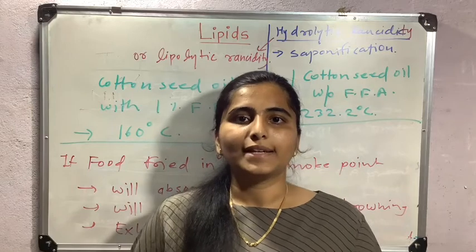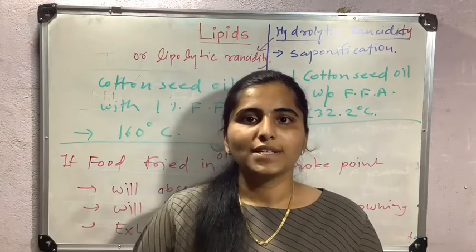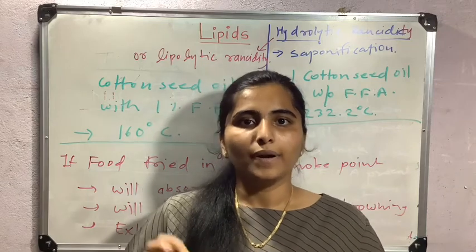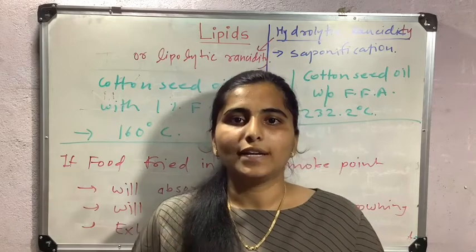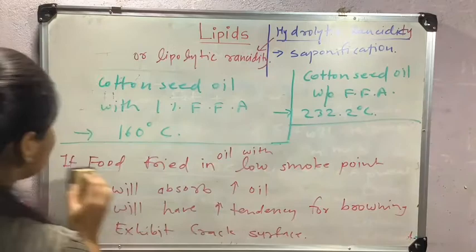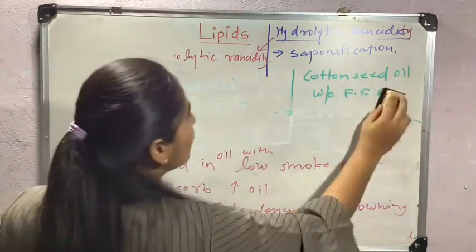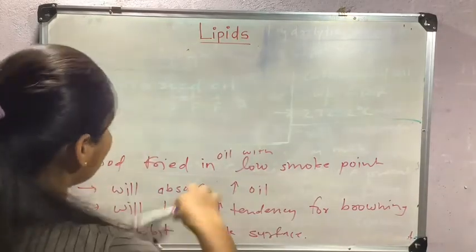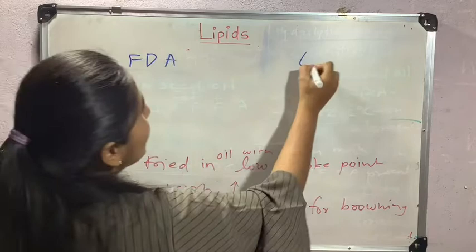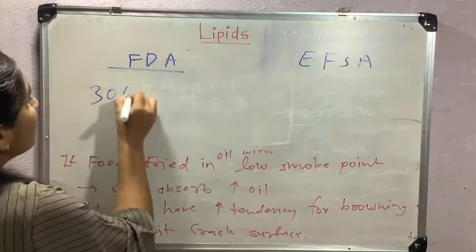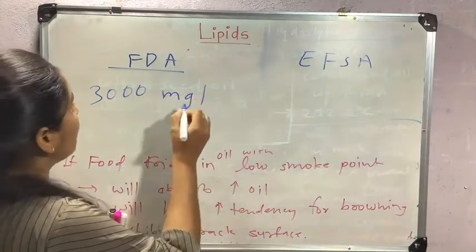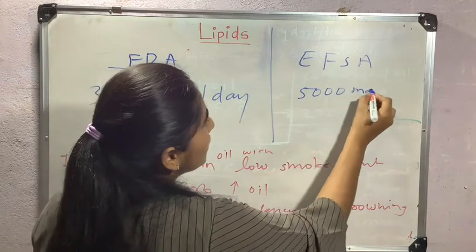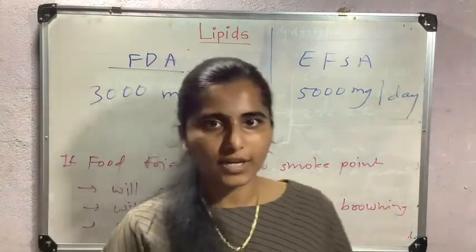An important point about omega-3 fatty acids: the FDA (Food and Drug Administration) claims that doses up to 3000 mg per day of omega-3 fatty acids containing EPA and DHA are safe. The European Food Safety Authority (EFSA) claims that doses up to 5000 mg per day of omega-3 fatty acids containing EPA and DHA are safe.